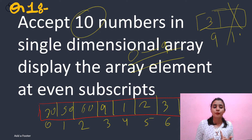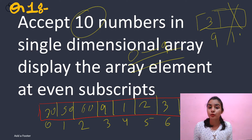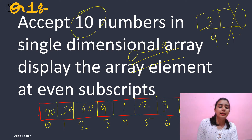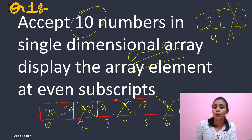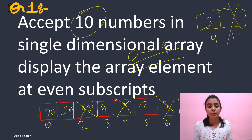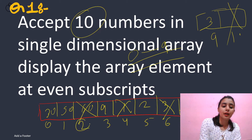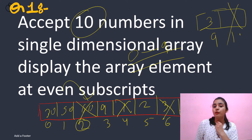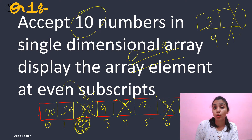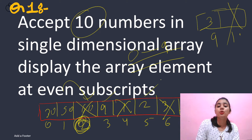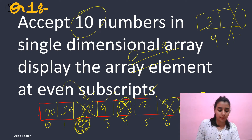Afterwards, we just have to display those elements which are at the even subscript. For example, I will print the elements at indices 2, 4, 6, and 8 — those are the even index values. Now think about the code: my loop variable i will start from 2, and I'll check if the index value is even or odd. If it's even, I print those elements at the even subscript.